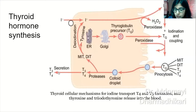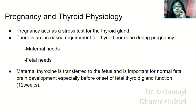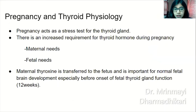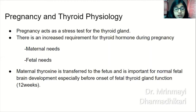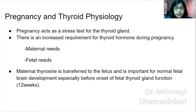Coming to the topic proper: pregnancy and thyroid physiology. Pregnancy acts as a stress test for the thyroid gland. There is an increased requirement for thyroid hormone during pregnancy to satisfy maternal needs due to an increase in the metabolic rate, as well as to satisfy fetal needs. Maternal thyroxine is transferred to the fetus transplacentally and is important for normal fetal brain development, especially before onset of fetal thyroid gland function. Fetal thyroid gland starts functioning around 11 to 12 weeks of gestation.